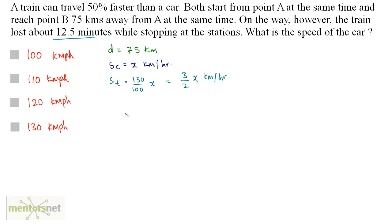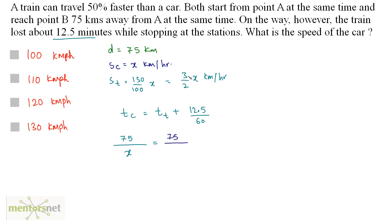So TC equals time of train plus 12.5 minutes. Converting 12.5 minutes to hours gives 12.5/60. Using time = distance/speed: 75/x equals 75/(3/2 · x) plus 12.5/60, which can be written as 125/(10 × 60).